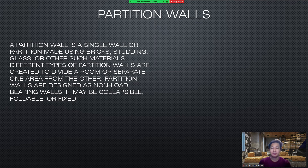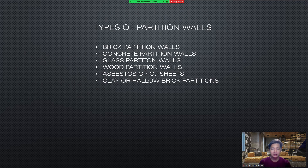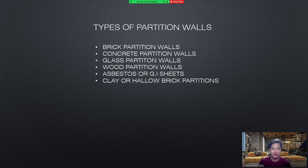Partition walls is a single wall or partition made using bricks, studding, glass, or other such materials. Different types of partition walls are created to divide the room or separate one area from the other. Partition walls are designed as non-load bearing walls. They may be collapsible, foldable, or fixed. Types of partition walls: number one, brick partition walls; number two, concrete partition walls; number three, glass partition walls; number four, wood partition walls; number five, asbestos or GI sheets; number six, clay or hollow brick partitions.